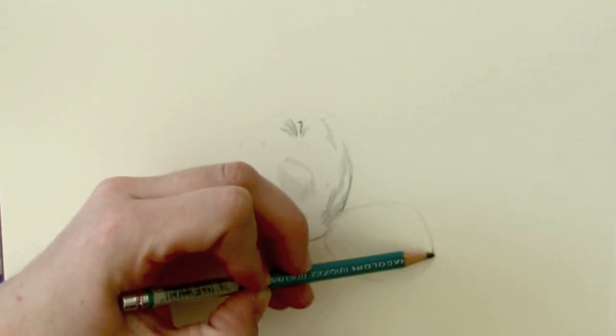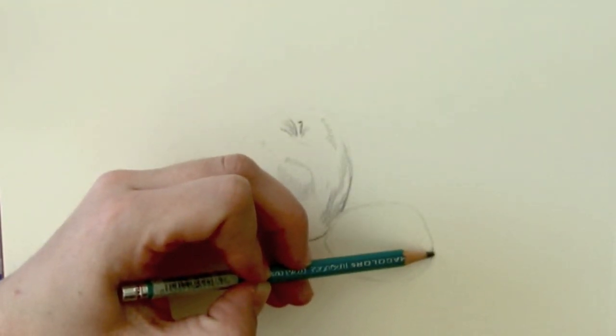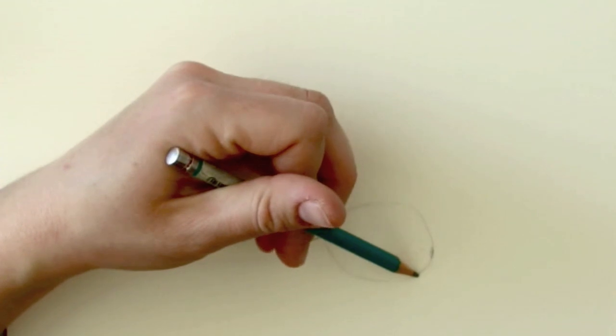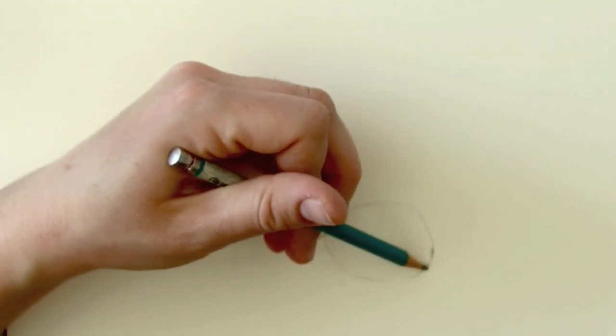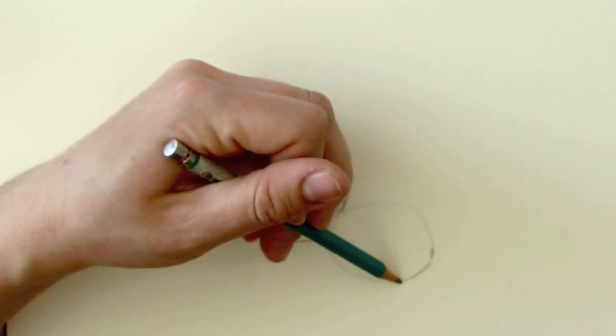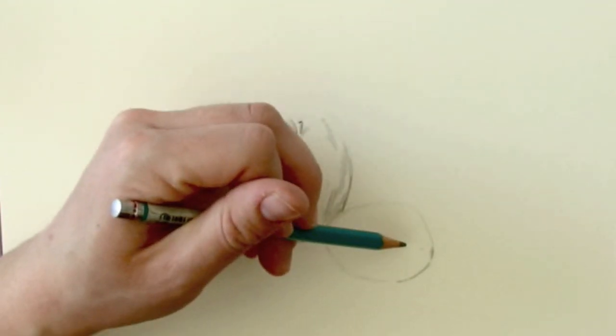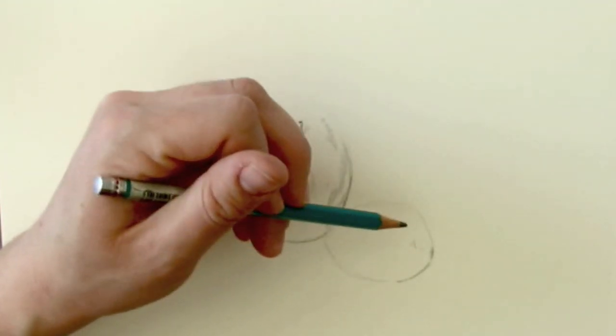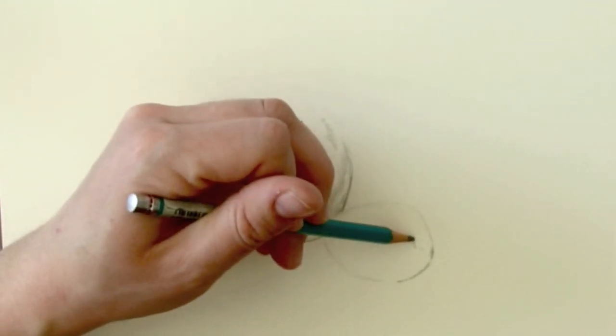I'm going to go in and do the shadows on the Roma tomato. There's a few more on this because it doesn't have as much light hitting it by the apple, plus the apple is blocking some of the light.